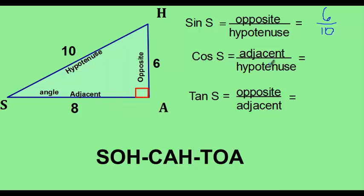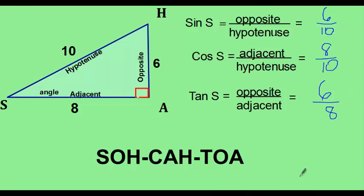The cosine is the adjacent over the hypotenuse. The adjacent side is 8 because it's touching the vertex, and the hypotenuse, also touching the vertex, is 10 — so the cosine ratio is 8 over 10. The tangent is the opposite over the adjacent: opposite is 6, adjacent is 8, so the tangent ratio of angle S is 6 over 8.